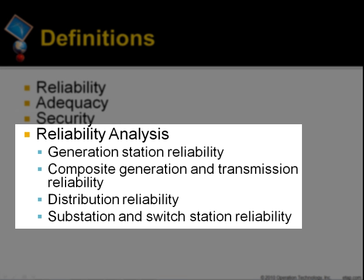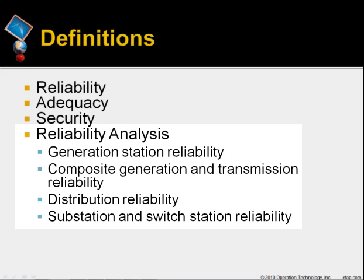Reliability assessment in general is classified as for generation station and generation capacity, for composite generation and transmission system, for distribution systems, for substation and switching stations, and for protection system. ETAP reliability analysis model is mainly for distribution systems.